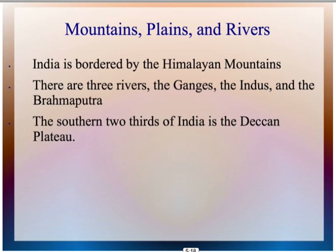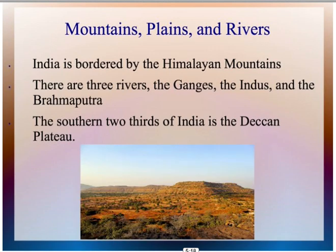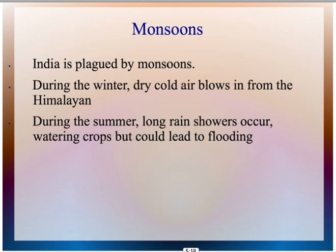The southern two-thirds of India is part of the Deccan Plateau, and as you can see, it's relatively flat lands. So India has all the major kinds of geography. In addition to physical geography, there are monsoons, and this is part of the weather and environmental patterns that we include in geography.